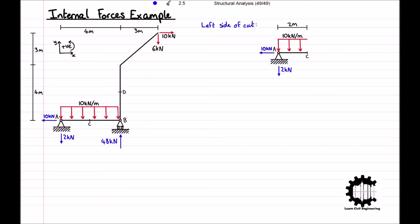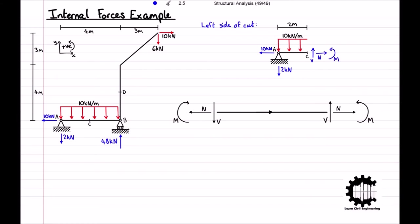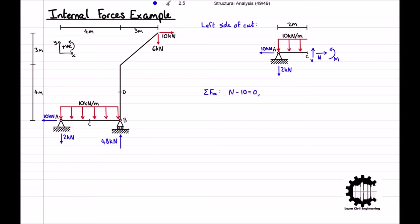As for finding any unknown forces, we must annotate the unknown internal forces at point C. Referencing back to our positive forces diagram, point C is the right side of the bar, so we draw on the corresponding positive internal forces. Applying the conditions of equilibrium, taking the x-coordinate direction to be positive, the sum of all horizontal forces is equal to N minus 10, which equals 0, so N is equal to 10 kN. Taking the y-coordinate direction to be positive, the sum of all vertical forces is equal to V minus 10 times 2, which equals 0, so V is equal to 22 kN.